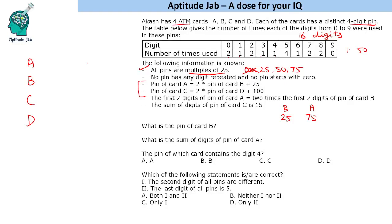So summarizing: if B ends in 25, A ends in 75; if B ends in 50, A ends in 25; if B ends in 75, A ends in 75. In all valid cases, the last digit of A is definitely 5.